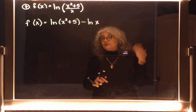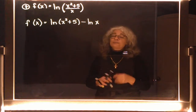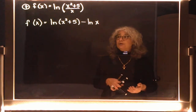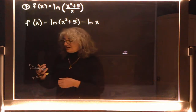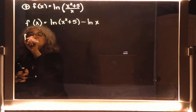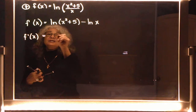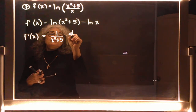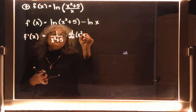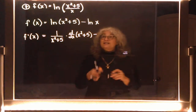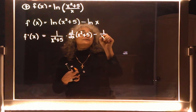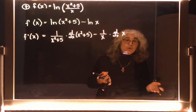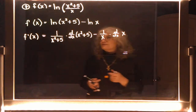If you had forgotten that property, go back and look at those videos on properties of log functions. Now that I have a subtraction problem, taking the derivative is quite easy. I take the derivative of ln(x² + 5), which is 1 over (x² + 5) times the derivative of (x² + 5), minus the derivative of ln(x), which is 1 over x times the derivative of x, which is just 1 — that's why there are two theorems.